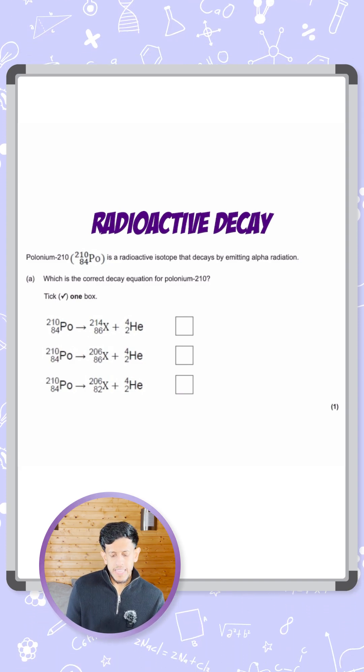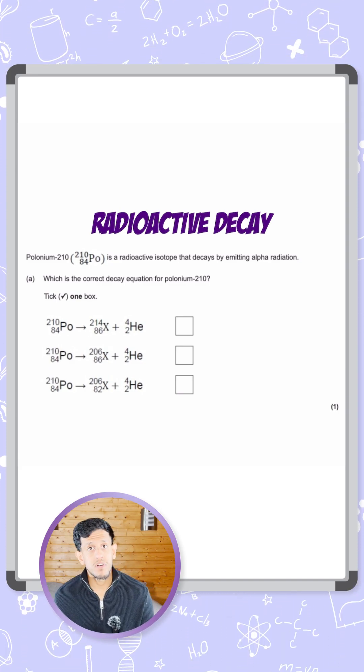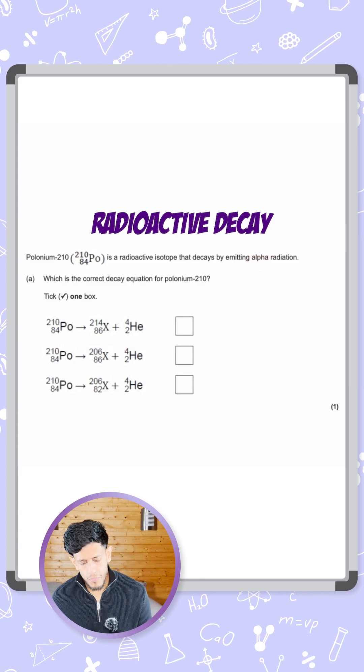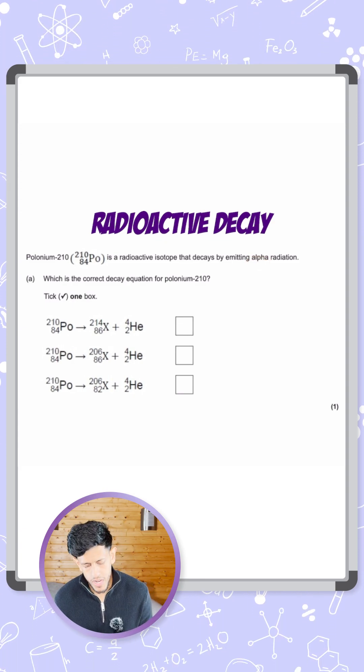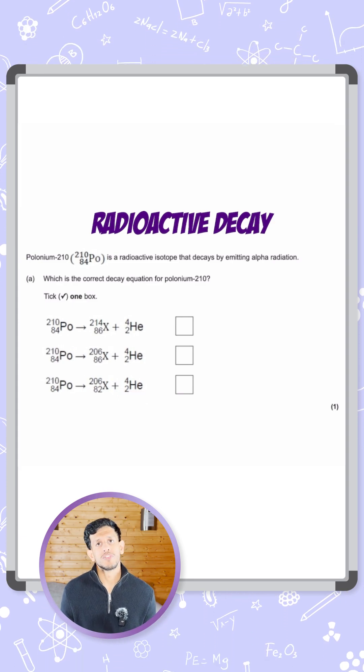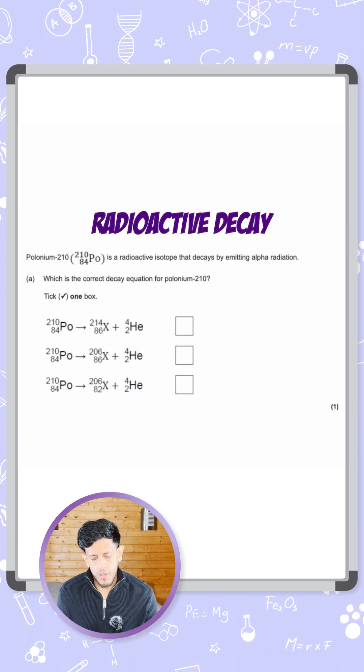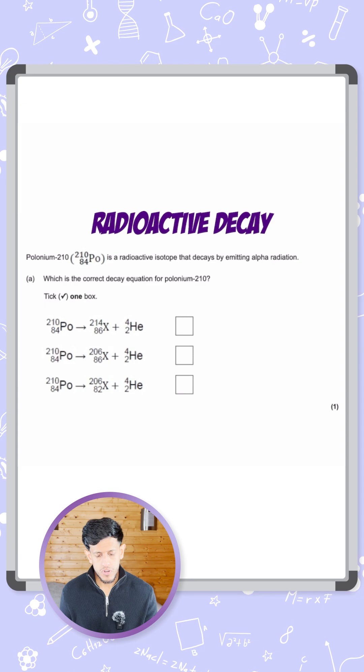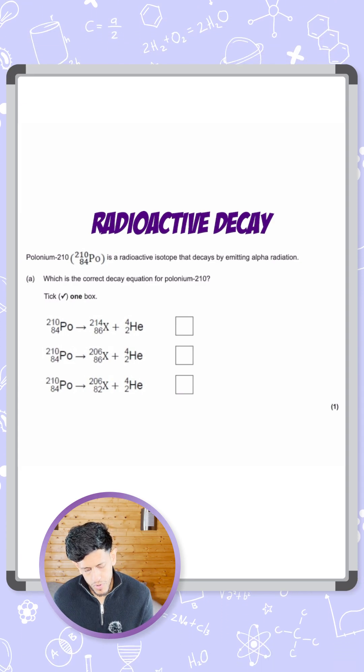Tick one of the boxes. So the key thing to note here—all three, because it's the decay of alpha—on the product side, the right-hand side of the equation, we have the alpha particle helium, mass number 4, atomic number 2. And obviously for polonium they've given us the mass number and atomic number, so it's the same for all three answers here.